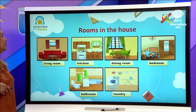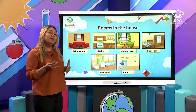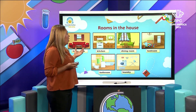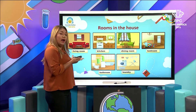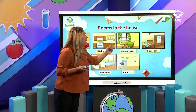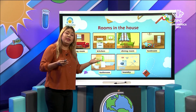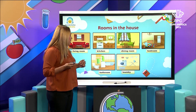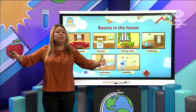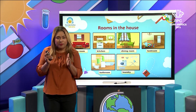Very good. These are the different rooms in the house. Some houses have, for example, one or two kitchens, one or two living rooms, several bedrooms. Maybe they have the dining room in the kitchen. Two or three bathrooms. Because houses can be big and houses can be small.